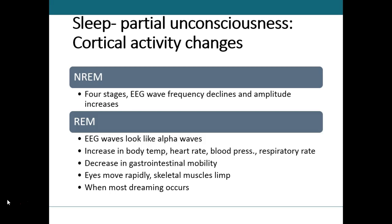Intervals of REM and NREM sleep alternate throughout the night. In adults, REM sleep totals about two to three hours during a typical eight-hour sleep period. As you age, the total time spent sleeping decreases, and so does REM sleep.